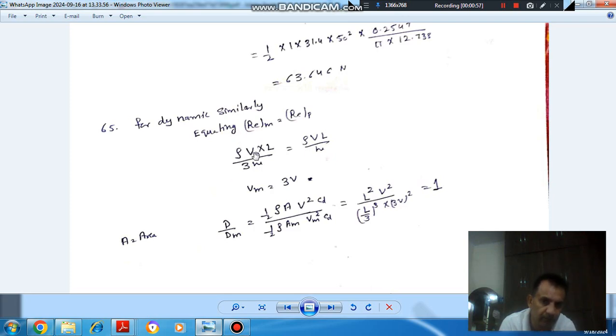So Vm will be the velocity in the model and V will be the velocity for prototype. Rho is density and mu is dynamic viscosity. As both are tested in the same medium, that is air, so rho and mu will be the same for both.